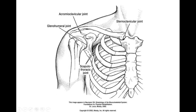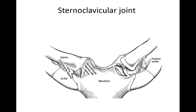We are going to be looking at the sternoclavicular joint, acromioclavicular joint, and the glenohumeral joint. Remember, those are the three true anatomical joints of the shoulder girdle. And then we have one more joint, the scapulothoracic joint, which is a functional joint that we will also be assessing. So we're going to start with the sternoclavicular joint. The sternoclavicular joint is composed of an articulation between the clavicle and the top of the sternum, or the manubrium.